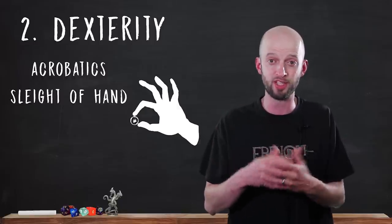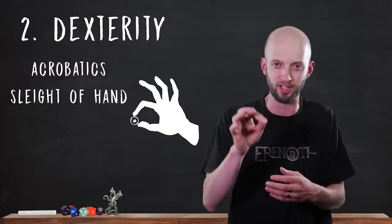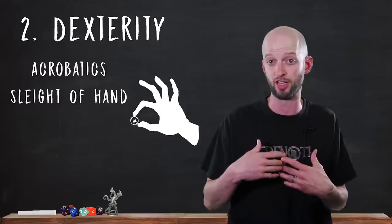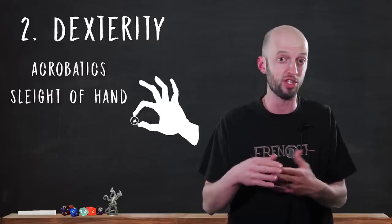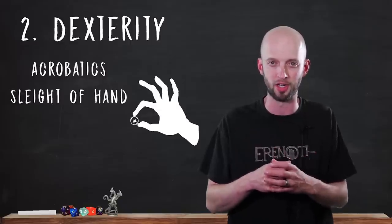Sleight of Hand. This is pretty much what it sounds like. Being sneaky with your hands. Like planting an object on someone. Or concealing an object on yourself. Or maybe gently lifting something off of someone. Like picking a pocket or cutting a coin purse.